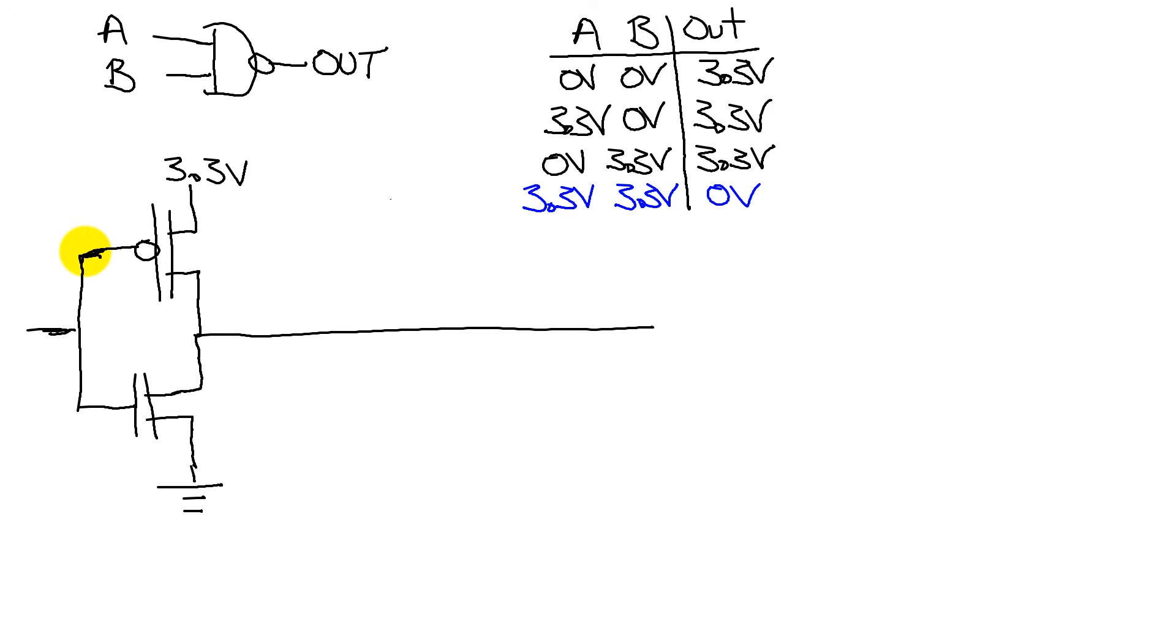Next, we're going to show you how to build a NAND gate. A NAND gate has two inputs, A and B, and one output, such that if A and B are true, then the output is false.